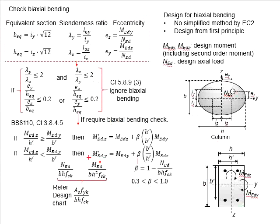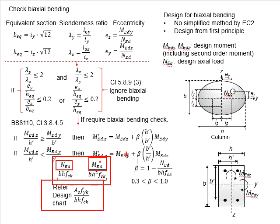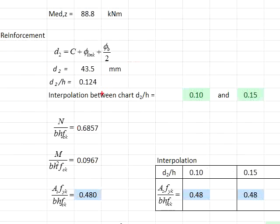Next, you will need to substitute the MEd and NEd into the formula and use the design chart to obtain the amount of reinforcement bar. Find the ratio of d2/h. It is equal to 0.124, which you need to obtain the interpolation for the chart of 0.10 and 0.15. Based on the numbers substituted, in the y-axis, you are looking at 0.686, while the x-axis, you are looking at 0.0967.